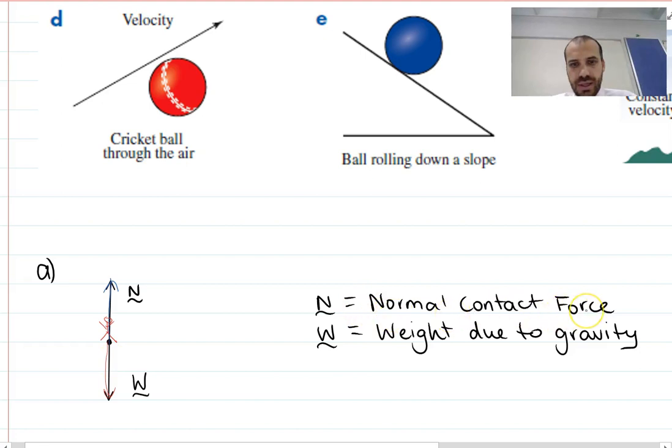It's called the normal contact force. Just quickly, it's called normal contact force, not like usual. Normal in the mathematical sense, it's perpendicular. The word normal means perpendicular. It's perpendicular to the ground. It makes a right angle with the ground. That's what we mean by normal contact force. All right, so there's our first person standing still.